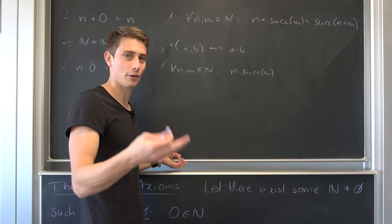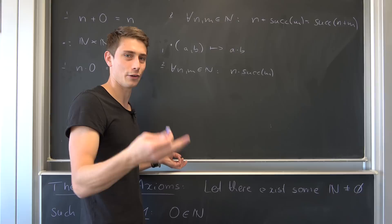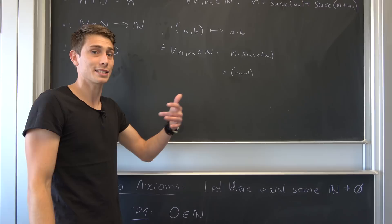N times the successor of M. What could that be? We can think of this in a little bit different way if you remember what the successor of M is. Well, this is just N times M plus one. We haven't talked about distributivity, it's something we have to prove, but just that you get an idea.